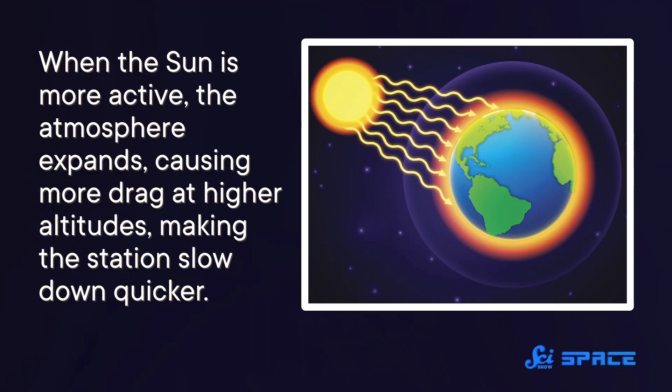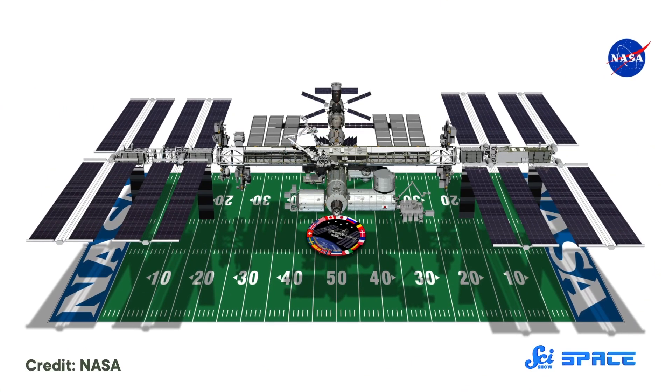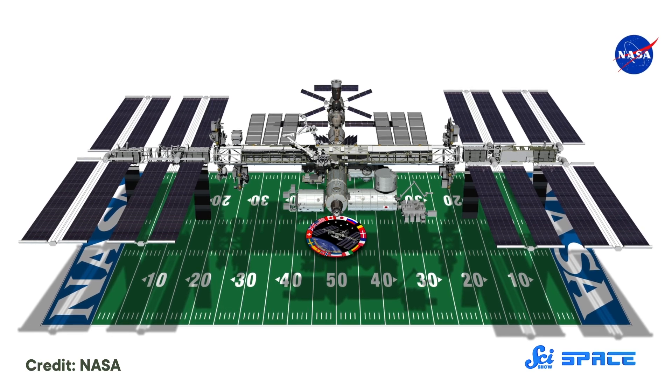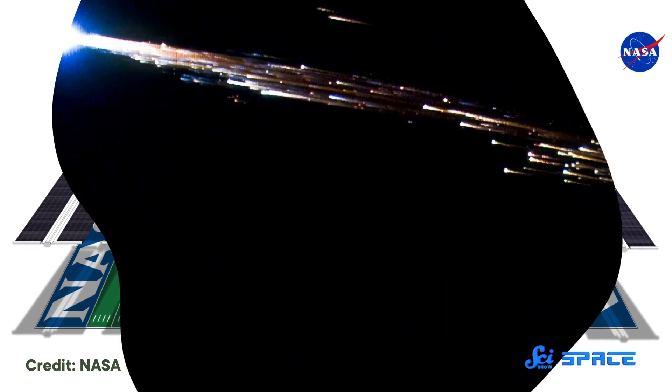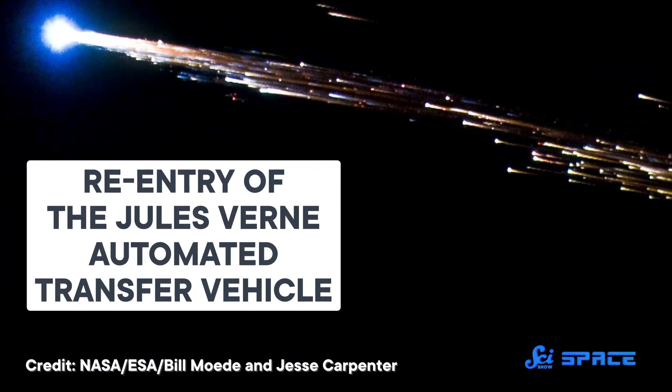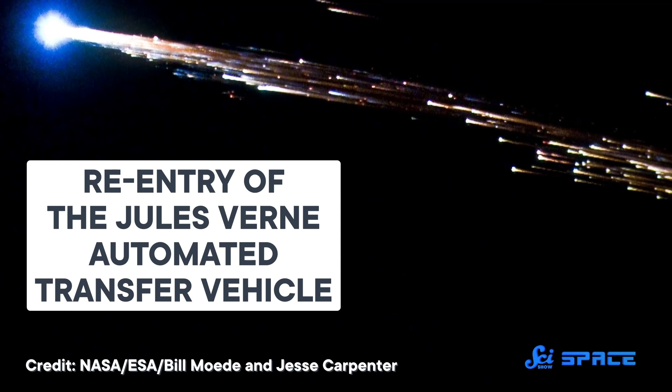That window actually depends on the sun. That's because when the sun is more active, the atmosphere expands, causing more drag at higher altitudes, making the station slow down quicker. And the timing of the drag-induced drop is critical. Weighing in at 420 tons and spanning the area the size of a football field, the station will be the largest structure ever to re-enter the Earth's atmosphere. The heat from re-entry will make it partly break apart and burn up, but the size and the complexity of the structure means that some parts are very likely to make it to the surface.